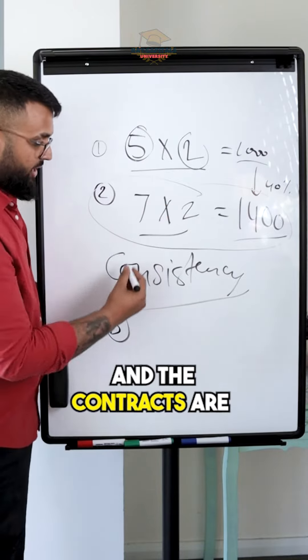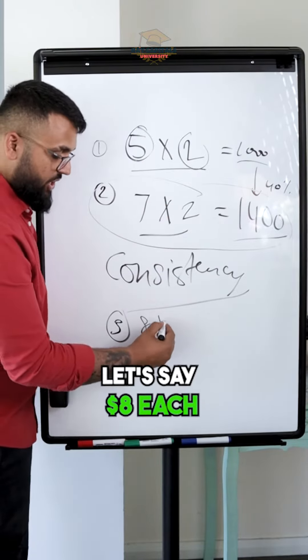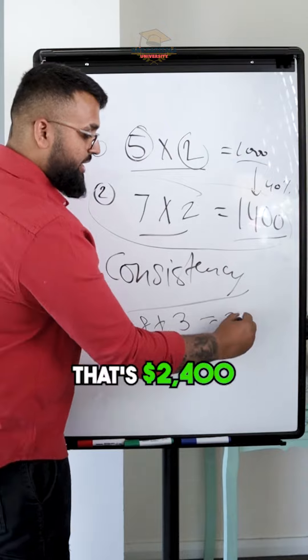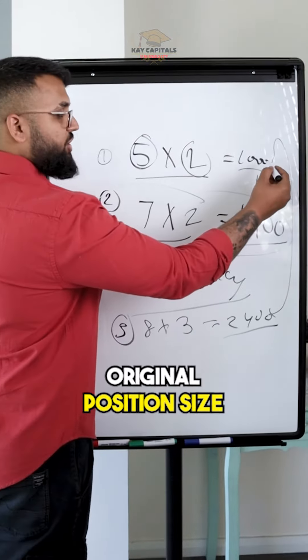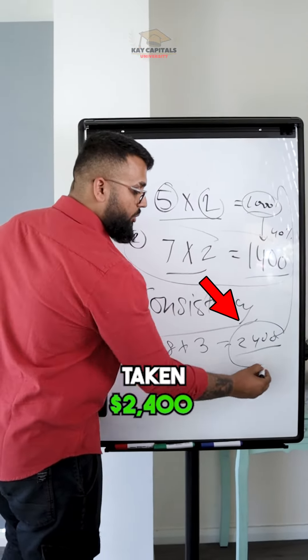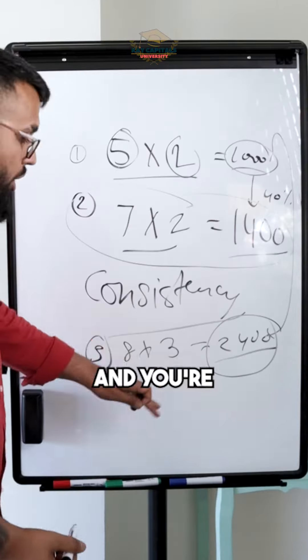So the next time you take a trade and the contracts are, let's say, eight dollars each and you took three contracts, that's twenty four hundred dollars. So the original position size was a thousand, now you're taking twenty four hundred dollars and you're not even thinking about this.